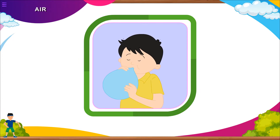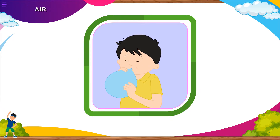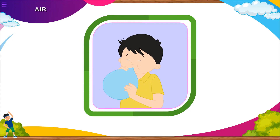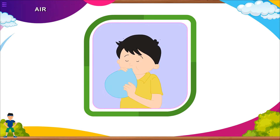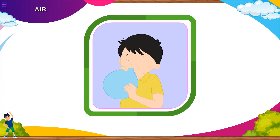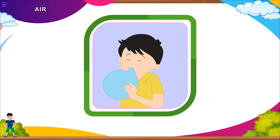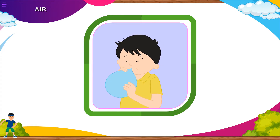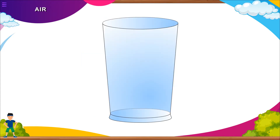Characteristics of air — Air occupies space: A balloon has air in it, so we say air occupies space. Similarly, footballs and tires are filled with air. An empty glass also has air filled in it.